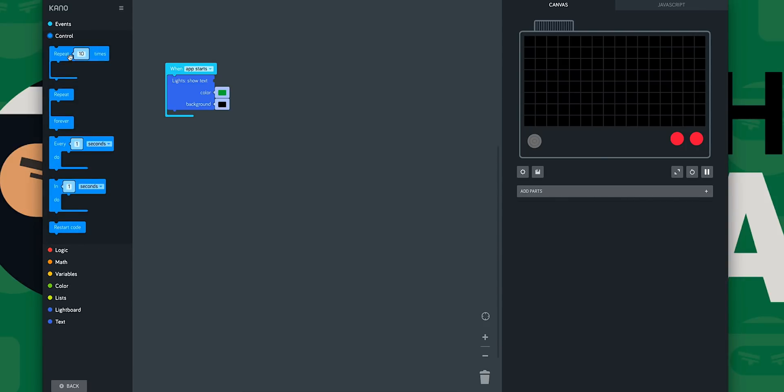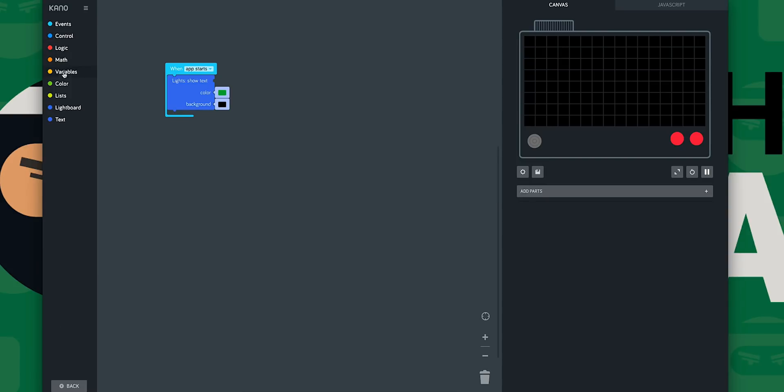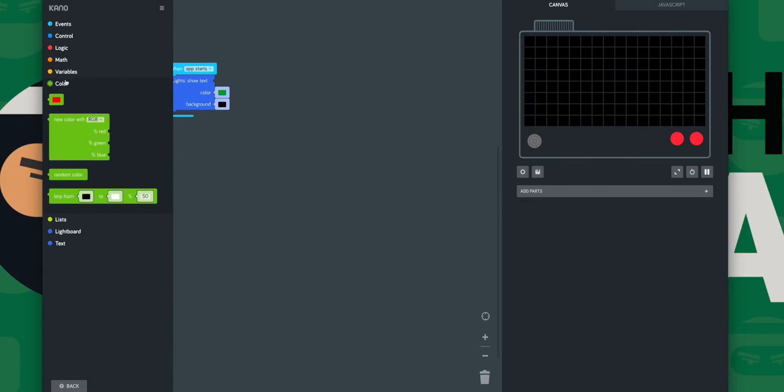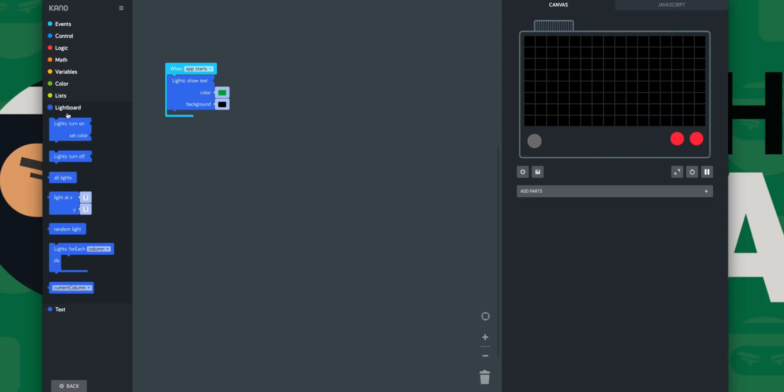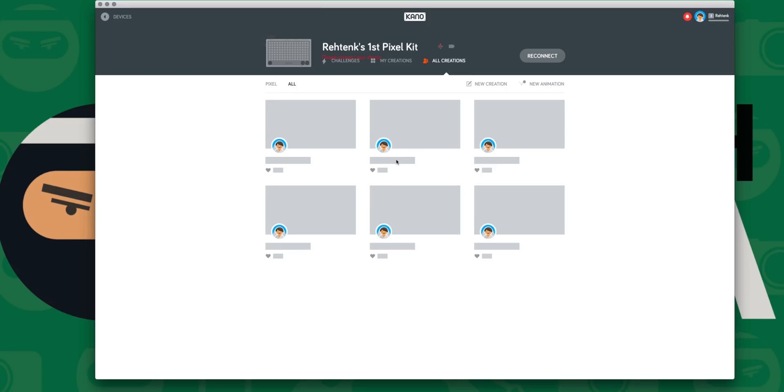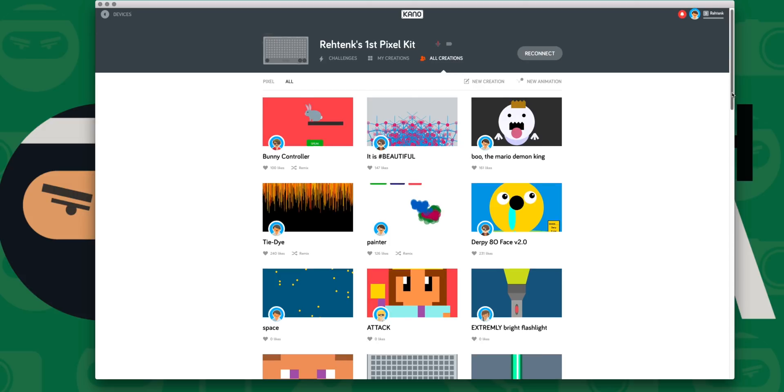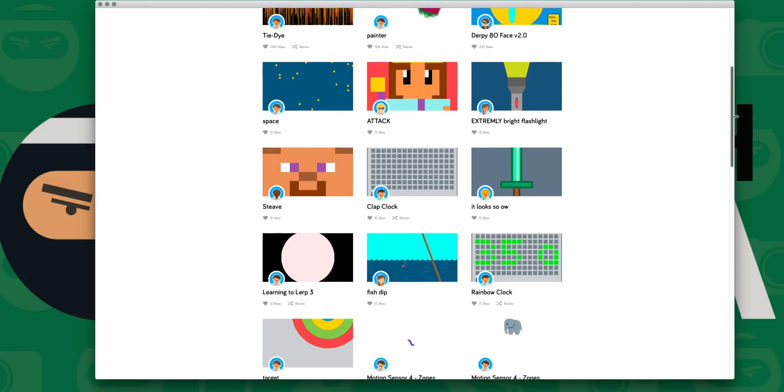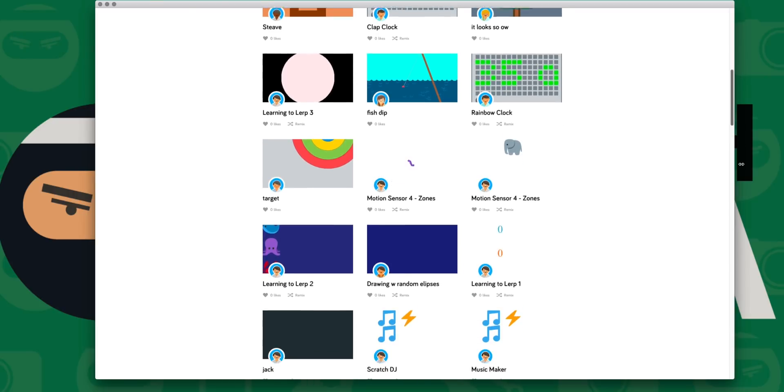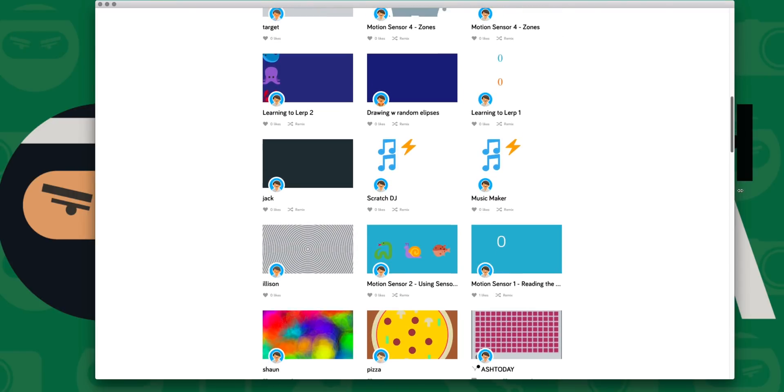Kano software also allows you to use real-life data in your programs. You can display the actual temperature in your area, sports scores, the location of the International Space Station, and more. Want to turn the Pixel Kit into a desk clock with the weather? Using live data, you can do that. You can even check out what projects other people are making. There are thousands of ready-made creations ready to be remixed and tweaked by anyone. You can download these projects and explore how they were made and make any changes you want. That means you can take your creations and actually put it out there for the world to download and modify too.